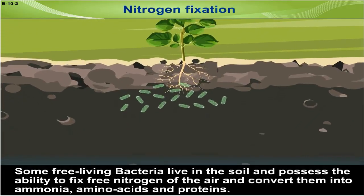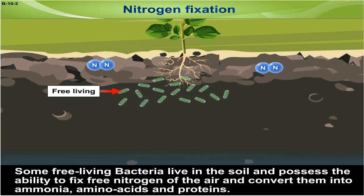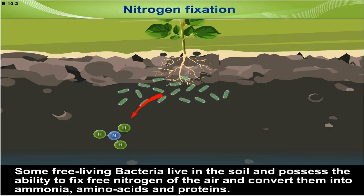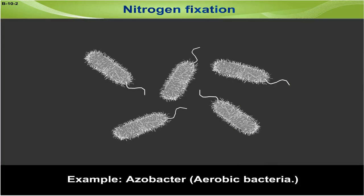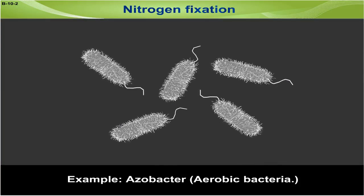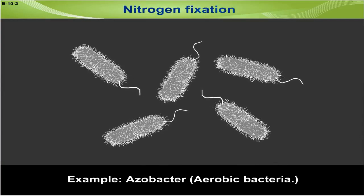Some free-living bacteria live in the soil and possess the ability to fix free nitrogen of the air and convert them into ammonia, amino acids and proteins. For example, Azobacter, i.e. aerobic bacteria.